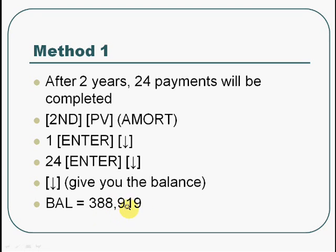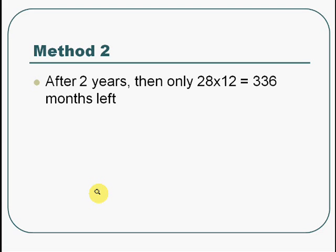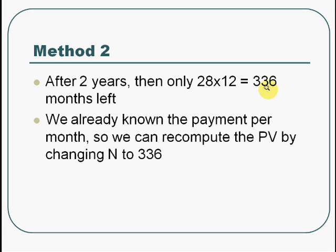Another method is to not use the amortization function. After 2 years, there will be only 336 months left — because after 2 years you already made 24 payments, leaving 28 years, and 28 times 12 equals 336 months. You can find the present value after 2 years by using the payment per month you already calculated, the known interest rate, and future value of 0. All you have to do is change N to 336 and recompute PV. It will give you the same number as Method 1.